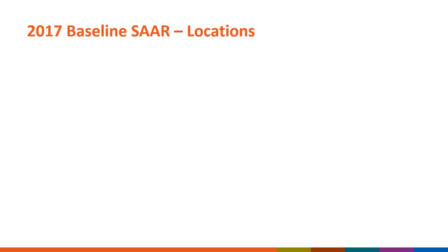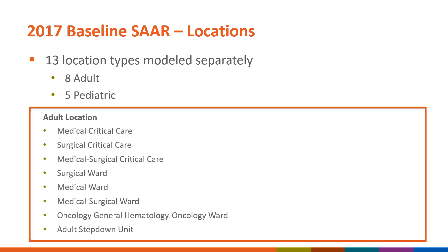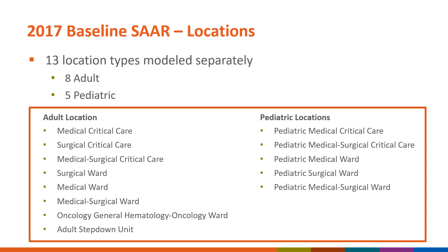While the original 2014 baseline SARs were developed for six location groupings, 2017 baseline SARs include 13 separately modeled locations. Unlike the 2014 baseline SAR, the 2017 baseline SARs model adult and pediatric locations separately, including 8 adult and 5 pediatric locations. Among these location types, two — general hematology oncology and adult step-down units — were added in the 2017 models.